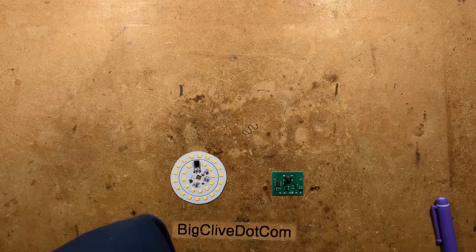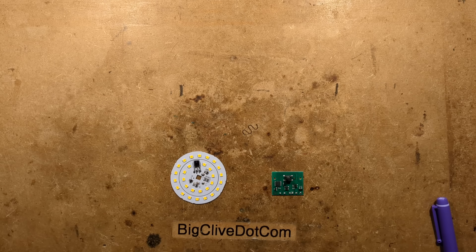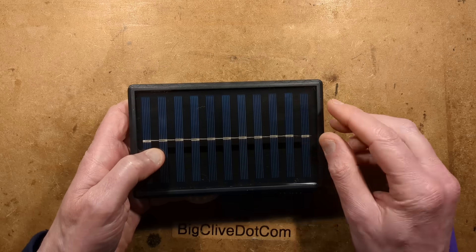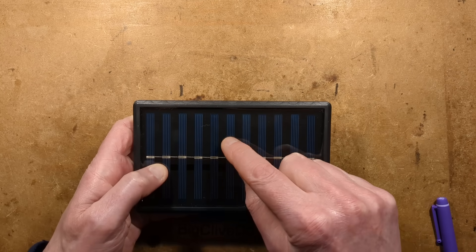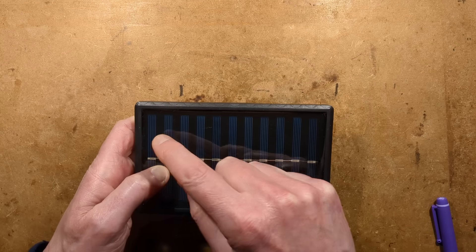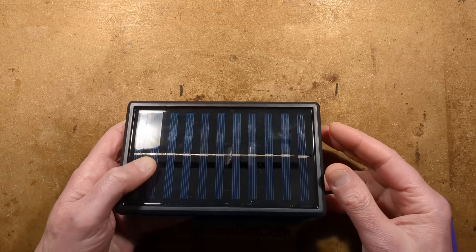The solar panel, I haven't tested that. Where is the solar panel? The solar panel is here. How many bits of silicon do we have? We've got 1, 2, 3, 4, 5, 6, 7, 8, 9, 10, 11... 5.5 volt, roughly, solar panel.